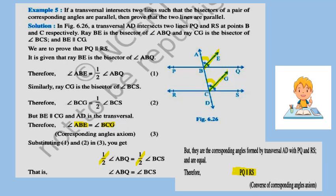From equations 1, 2, and 3 combined: half of angle ABQ equals half of angle BCS. The halves cancel, giving angle ABQ equals angle BCS. These are corresponding angles, and corresponding angles being equal means the lines are parallel. By the converse of the corresponding angle axiom, PQ is parallel to RS.